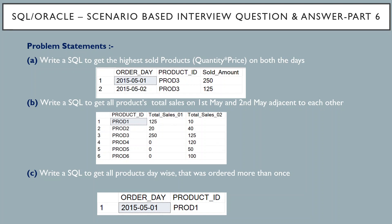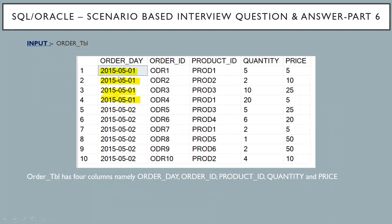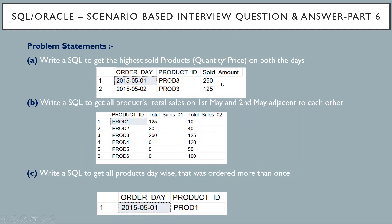If we go back to the main table, on the first May, product ID 3 with order ID 3 has quantity sold 10 and price 25. If I multiply, it gives 250, but all others give less than 250, so this is the maximum. That's why it is present in our output table. Similarly, for 2nd May, product 3 also has the maximum transaction because 25 into 5 is 125, and the rest all have less sold amount. So the output is: 1st May, product 3, 250 and 2nd May, product 3, 125 sold amount. This is the first question.